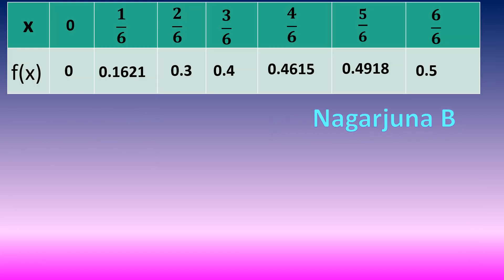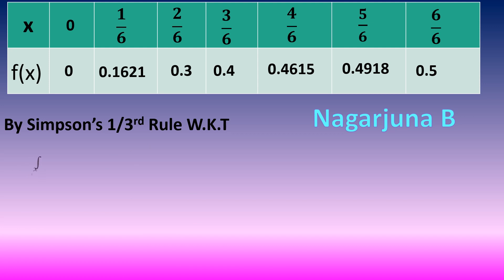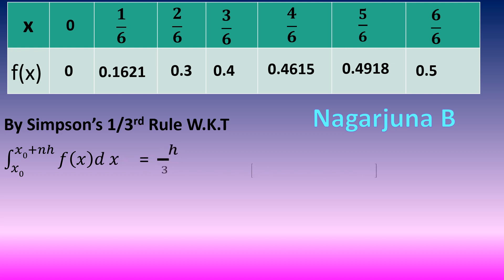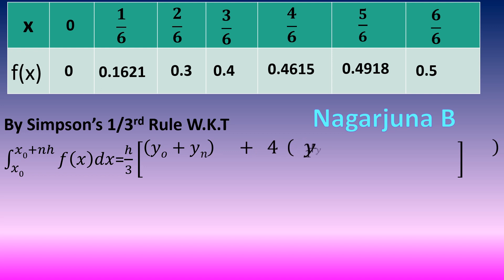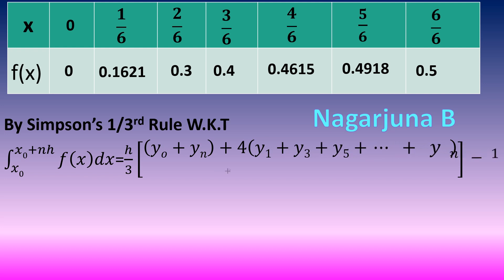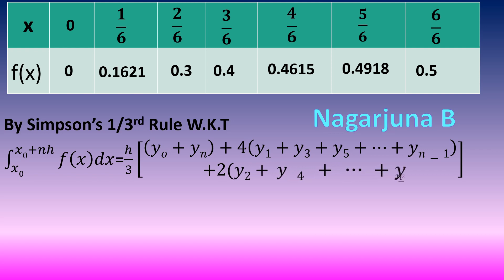Consider the tabulated values which we have just calculated. By Simpson's one-third rule, we know that the integral from x naught to x naught plus nh of f of x dx equals h by 3 into: first term plus last term, that is y naught plus yn, plus 4 into sum of all odd terms — y1 plus y3 plus y5, etc., up to yn minus 1 — plus 2 into sum of even terms — y2 plus y4 plus y6, etc., up to yn minus 2. This is the formula of Simpson's one-third rule, also known as Simpson's rule.